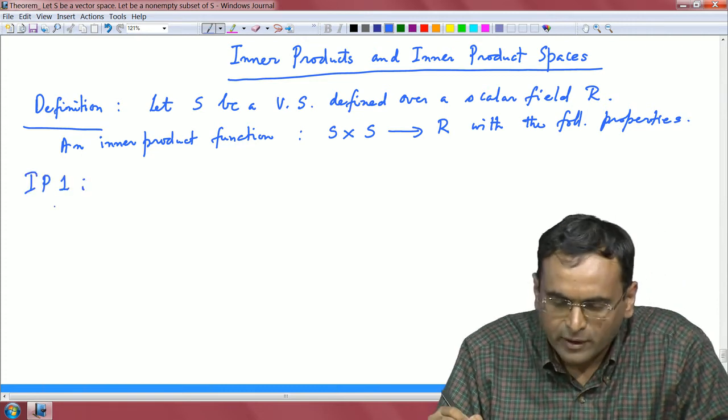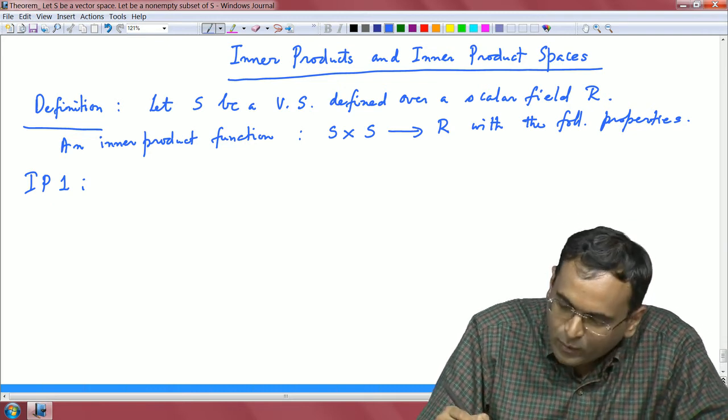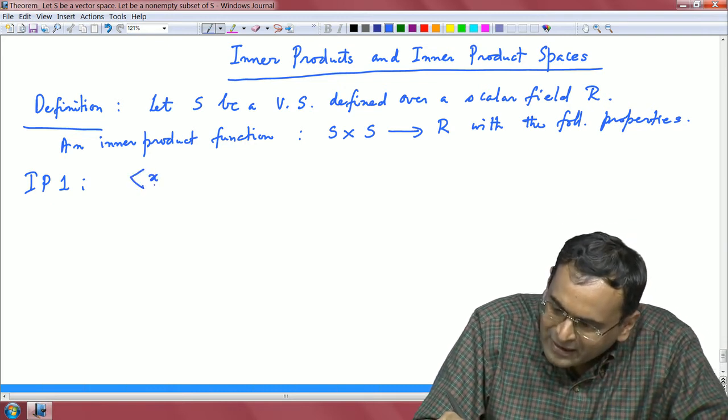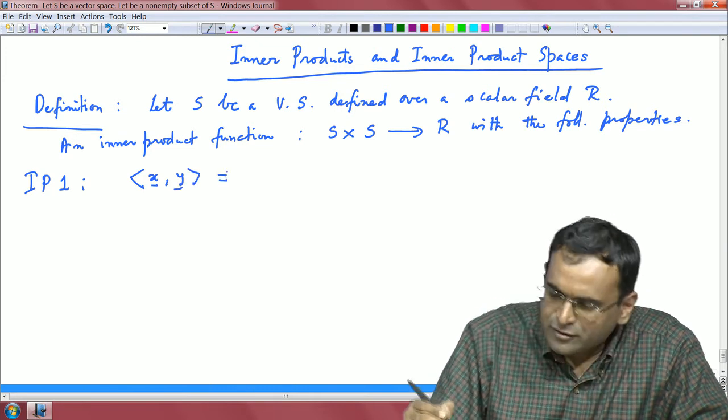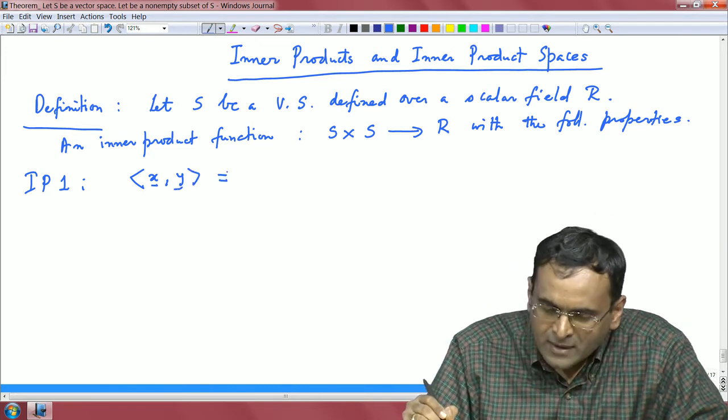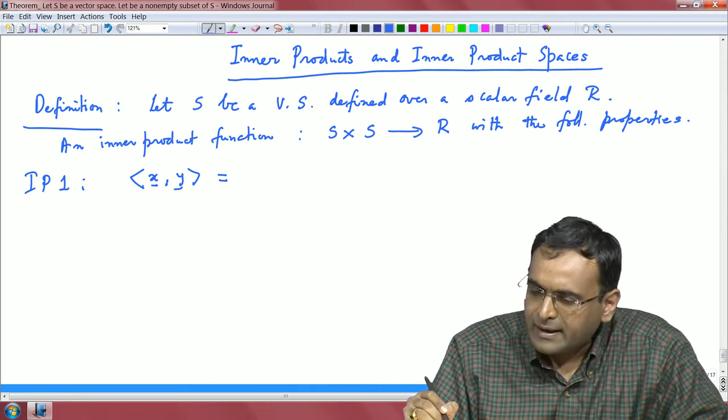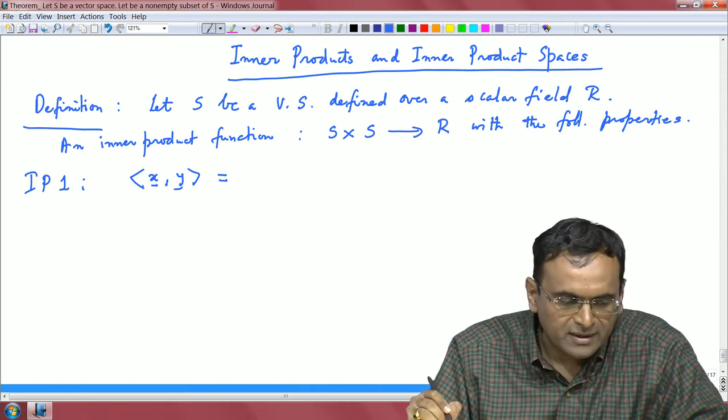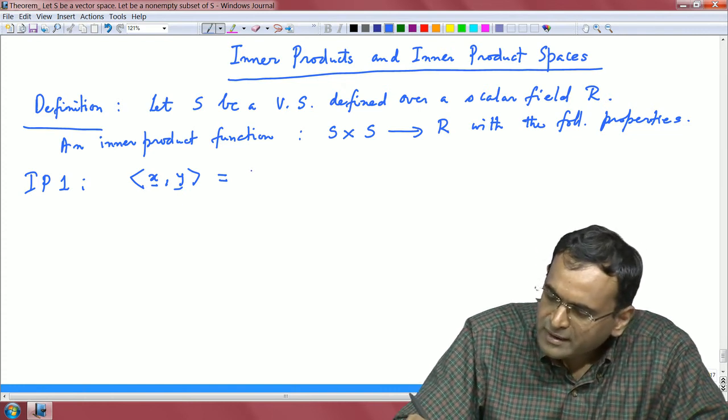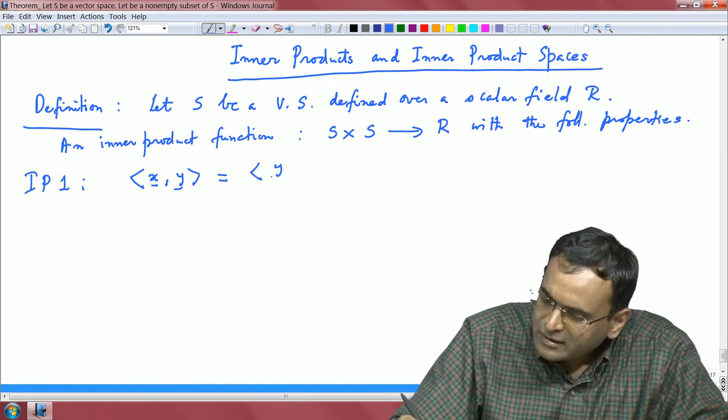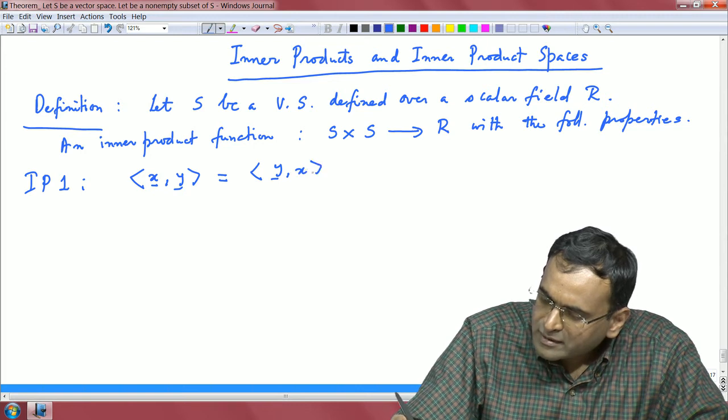IP 1 stands for inner product property 1. The inner product of x with y, assume that x and y are vectors and each of the coordinates are real entries, is equal to the inner product of y with x.